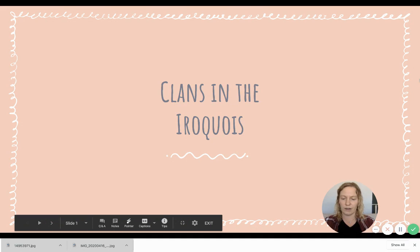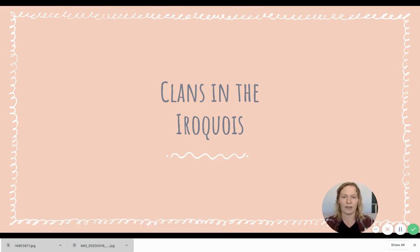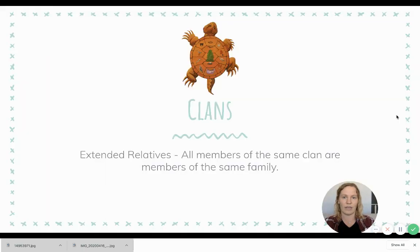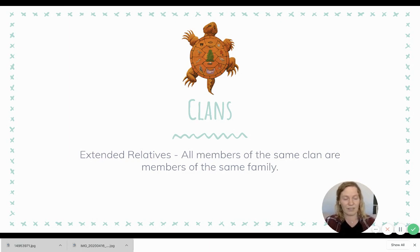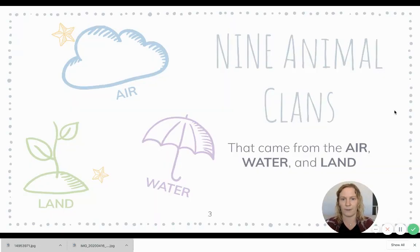Our nations are the Seneca, Cayuga, Onondaga, Oneida, Mohawk, and Tuscarora. So again, our clans — that's just your extended relatives. Instead of having last names to show you're all part of the same family, in the Iroquois Confederacy they had clans to show that they were all members of the same family.